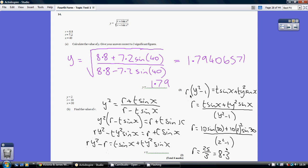So r times (y squared minus 1) equals the right-hand side. Finally, I can undo this multiplying by y squared minus 1, isolating r and making r the subject. At that point, I've substituted in my three values to work out what r was: 25 over 3.